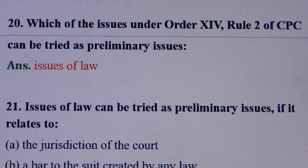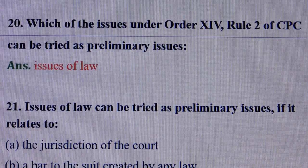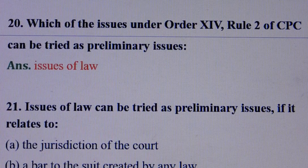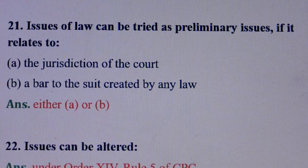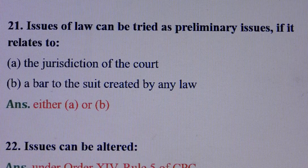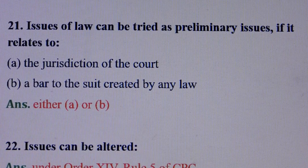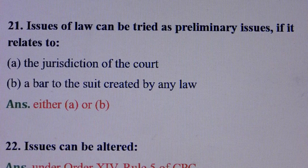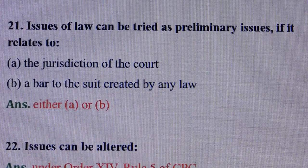Question number 20: Which of the issues under Order 14 Rule 2 of CPC can be tried as preliminary issues? Answer is: issues of law. Question number 21: Issues of law can be tried as preliminary issues if it relates to — answer is: either A or B. That means: Option A — the jurisdiction of the court; Option B — a bar to the suit created by any law.